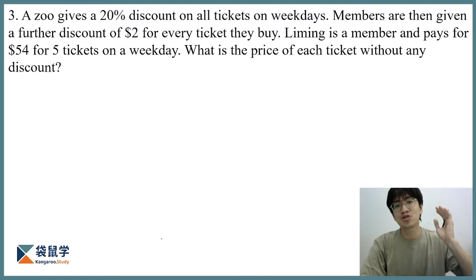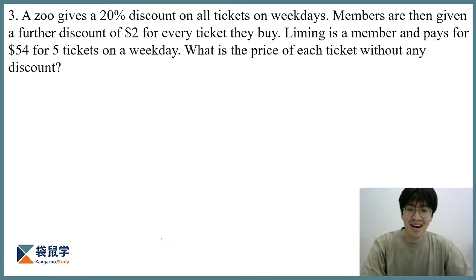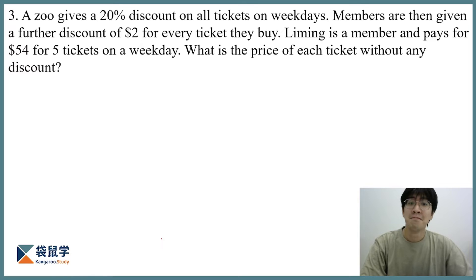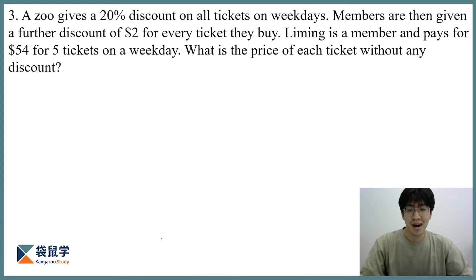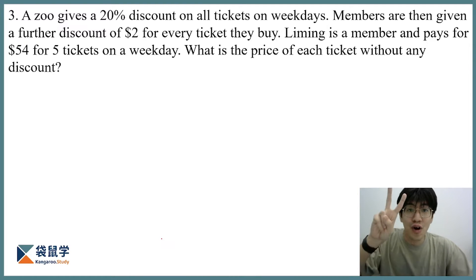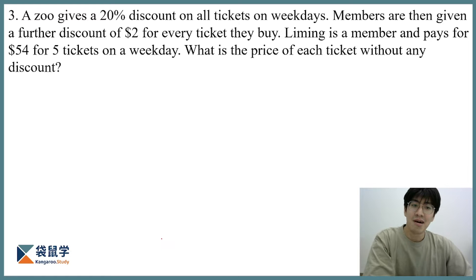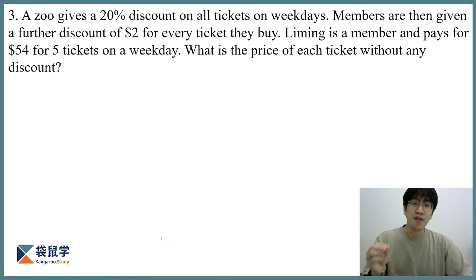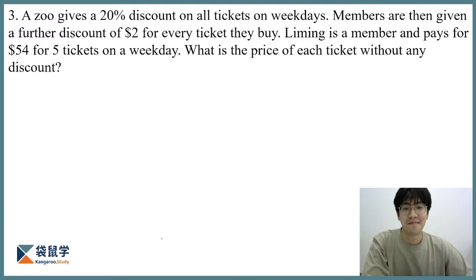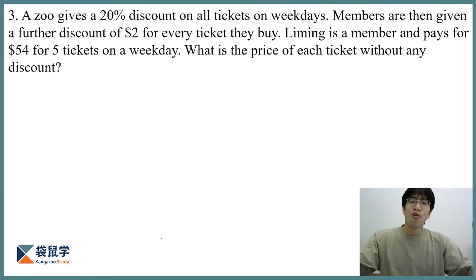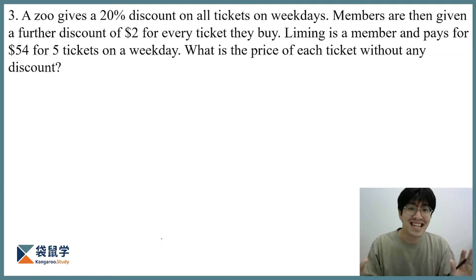A Zhu gives a 20% discount on all tickets on the weekdays, and members are then given a further discount of $2 for every ticket. Li Ming is a member and pays $54 for 5 tickets on a weekday. What is the price of each ticket without any discount?